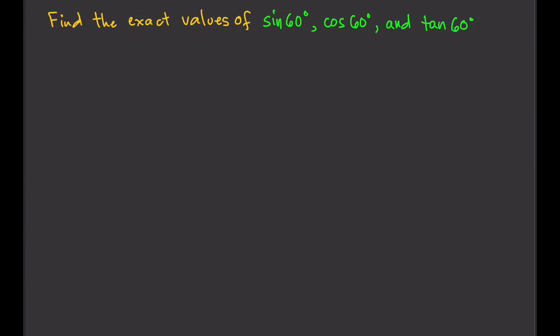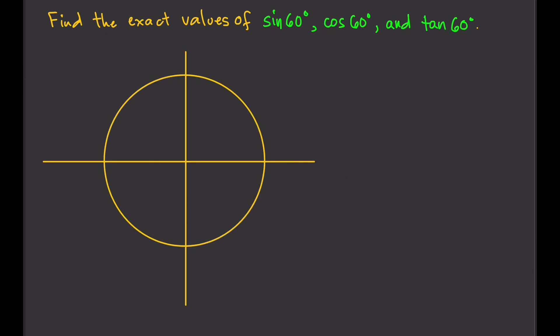In this video, we're going to find the exact values of trigonometric functions. Let's start off with finding exact values for sine 60 degrees, cosine 60 degrees, and tangent 60 degrees. To do this, we're going to need the unit circle.